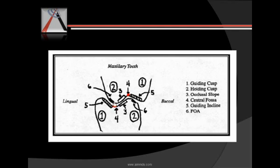In mandibular teeth the lingual incline is called the occlusion slope, while in maxillary teeth the palatal cusp buccal incline is called the occlusion slope. The central fossa is number four, and number five is the guiding incline. The one-to-two millimeter area of the supporting cusp that contacts the guiding cusp of the opposite teeth is called the functional occlusal aspect, and the area it contacts is called the guiding incline, which is part of the guiding cusp.